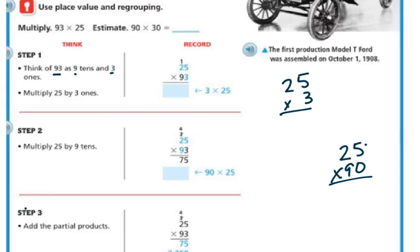So let's do it. If I think of the 93 as 9 tens and 3 ones, it's going to be easier. So I've got 25 times the 3 ones. So 3 times 25. So 3 times 5 is 15. So I put my 1 here, my 5 here. Now I have 3 times 2, which is 6, plus my 1 is 7. So I should get 75. So 25 times 3 ones is 75.